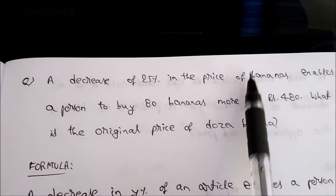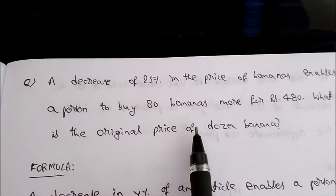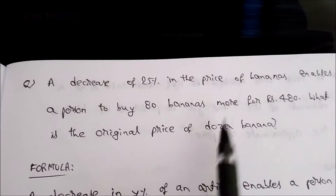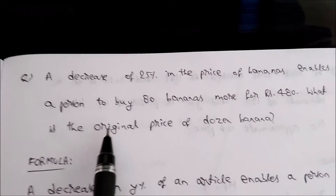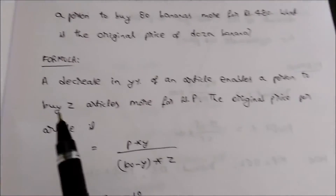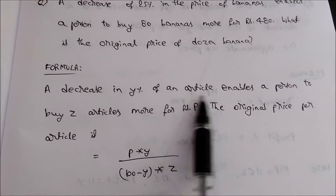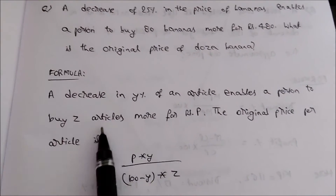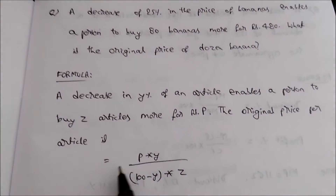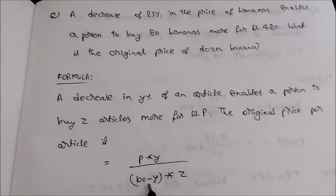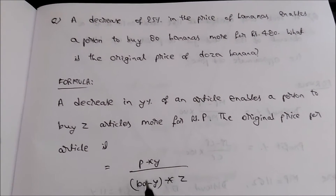What we need to find is the original price of a dozen bananas. Now there is a formula for this — just remember this: a decrease of y% in an article enables a person to buy z articles more for rupees p. The original price per article is p multiplied by y, divided by (100 minus y) multiplied by z.